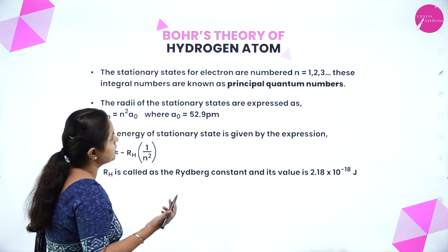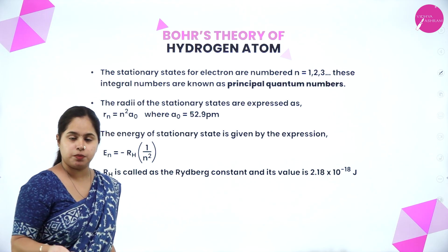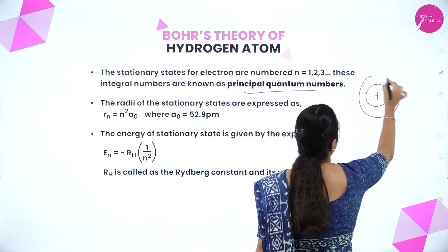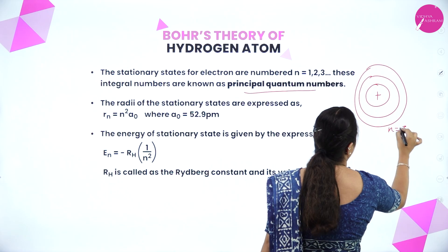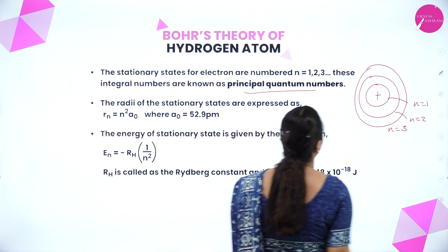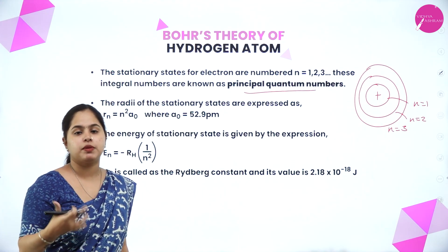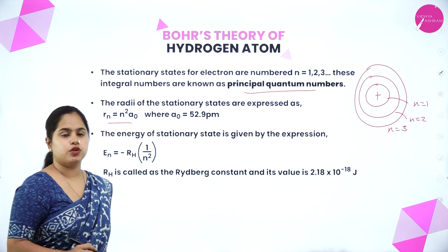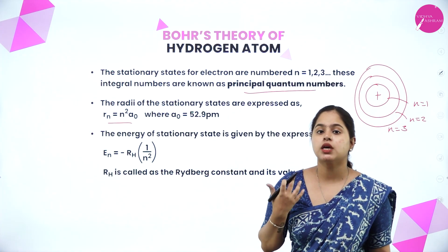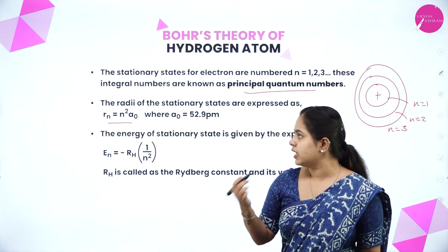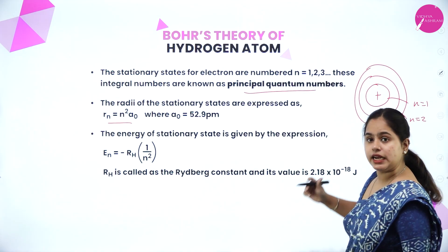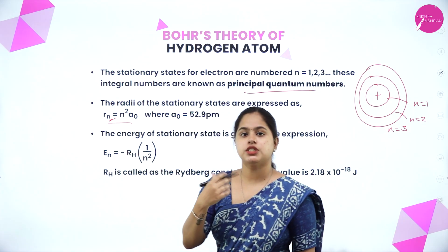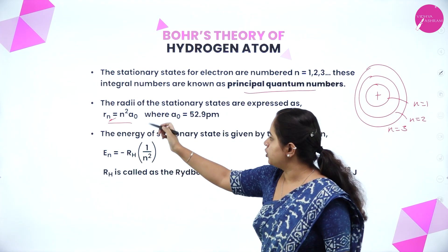Beginning with Bohr's theory of hydrogen atom, the stationary states for electrons are numbered as N = 1, 2, 3. These integral numbers are known as principal quantum numbers. There will be various energy levels represented as N = 3, N = 2, N = 1. The radii of the stationary states are expressed using the equation Rn = N² × a₀, where the radius corresponding to each energy level can be calculated.